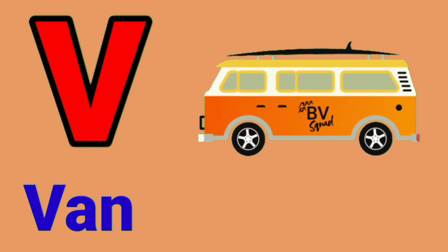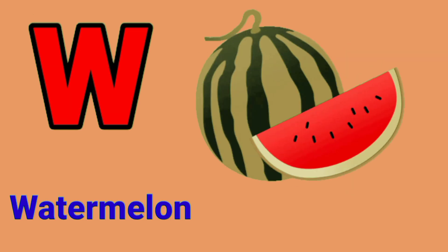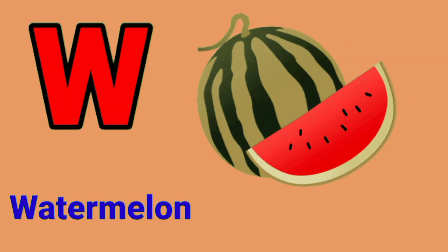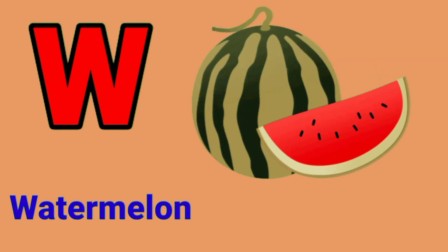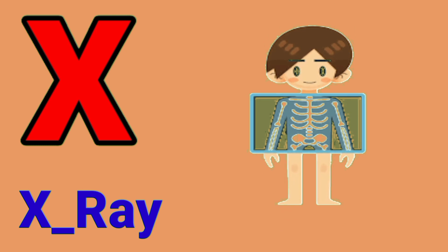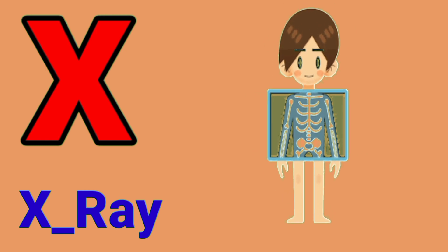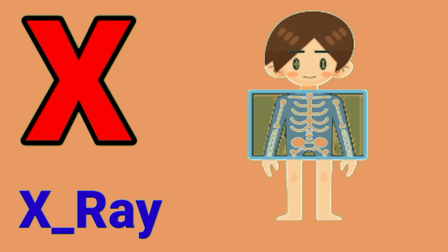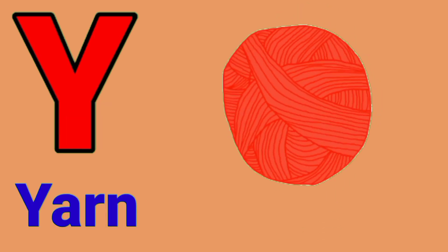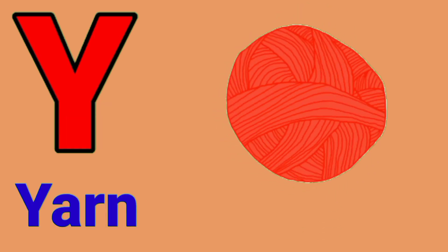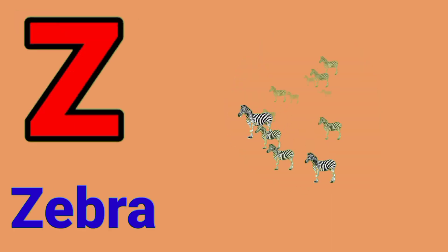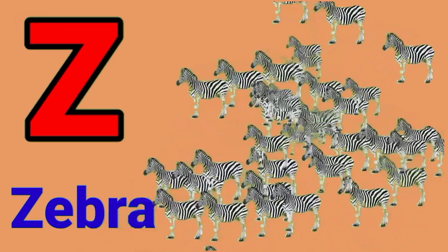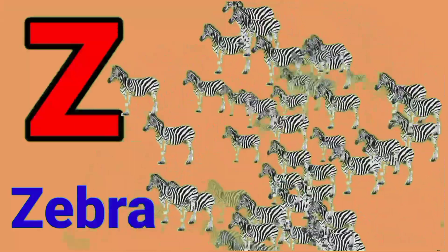V for van. W for watermelon. X for x-ray. Y for yarn. Z for zebra. I'll see you next time.